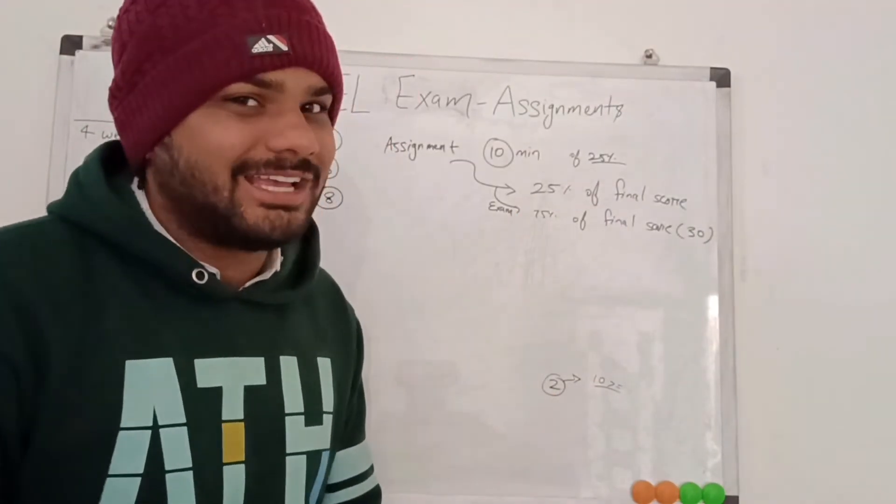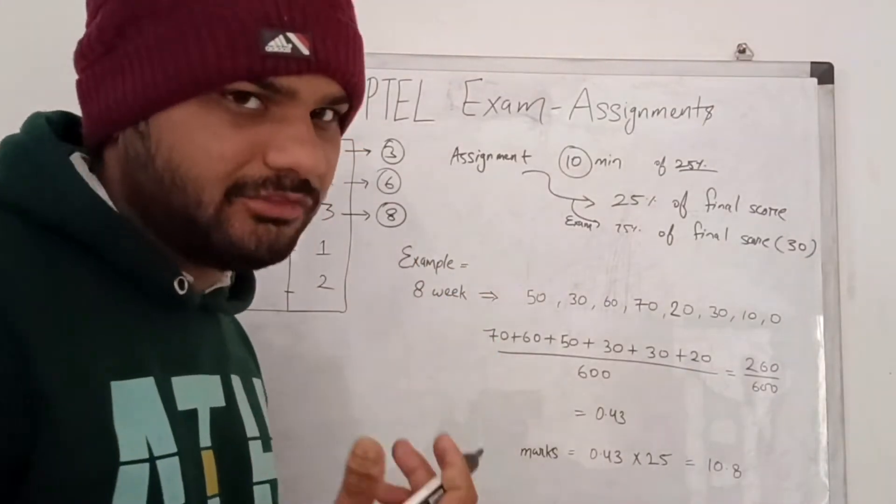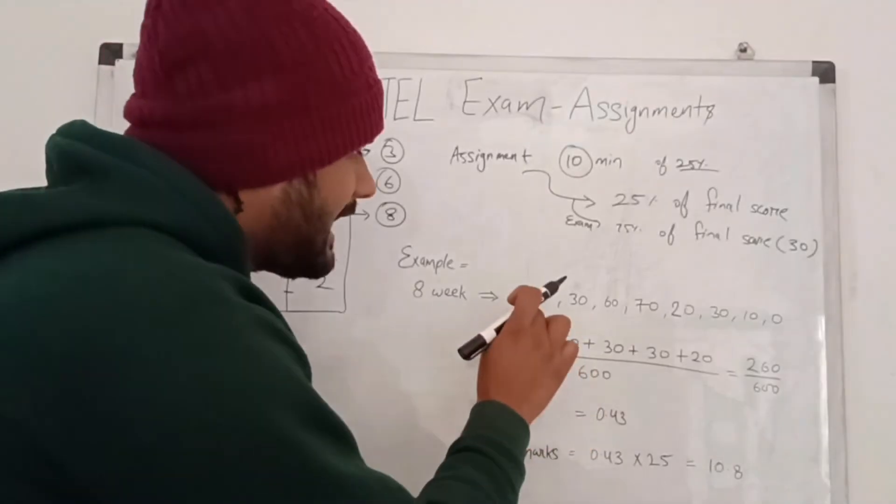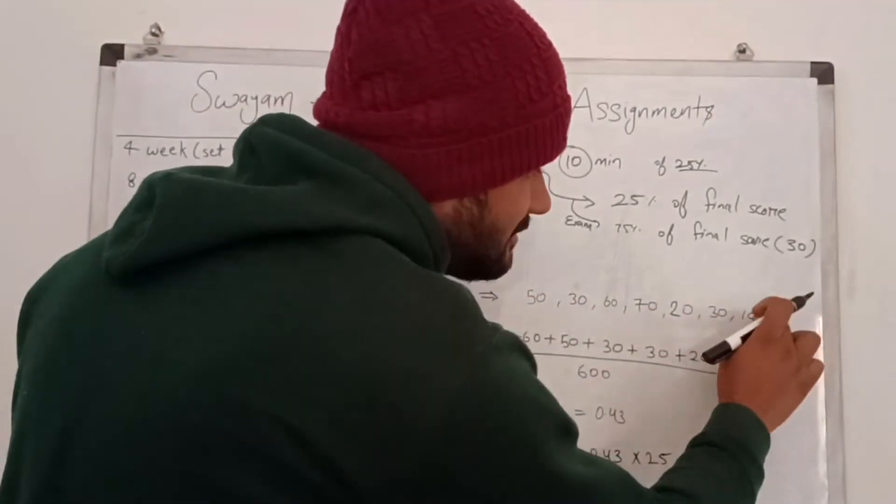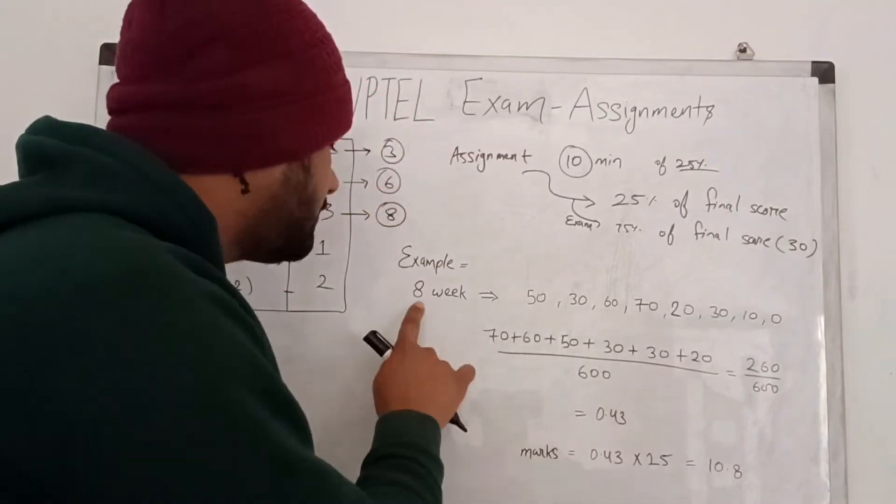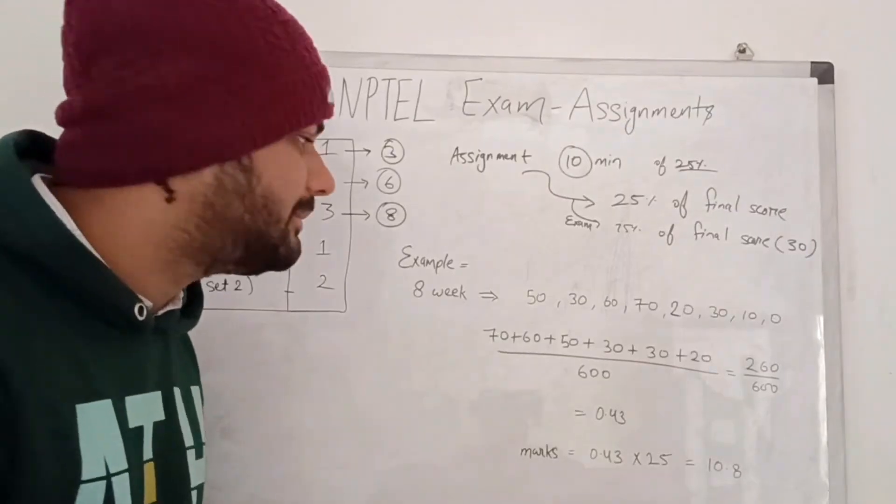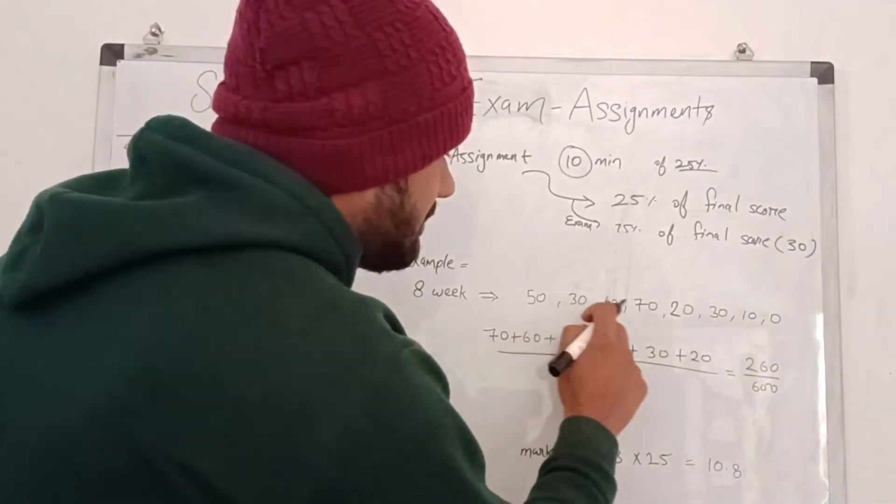Now let's have an example. I have applied for the 8 week course and I have given all the assignments except the last one. So I totally gave only 7 assignments out of 8. But according to this rule, only 6 best assignments will be considered.